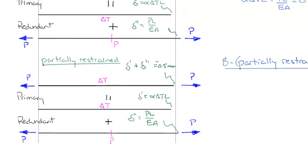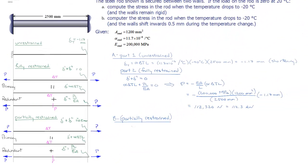That's the same logic we applied before, only instead of negative 0.5 millimeters, we had a displacement of 0 millimeters. So I write down my compatibility equation: delta prime plus delta double prime equals negative 0.5 millimeters.